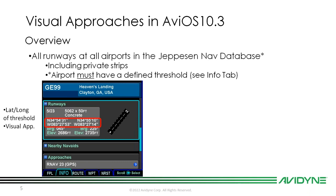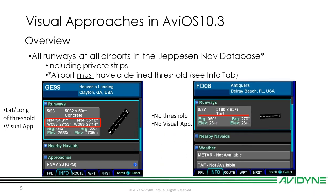If you go to the info tab and do not see a lat/long under the runways — for example, Antiqua's Aerodrome in Delray Beach — there's no lat/long for that runway, so there's no defined runway threshold and no visual approach available. If you're loading a flight plan and the visual approach option doesn't appear in your dropdown, this is probably why, especially if you have visual approaches turned on in setup options.